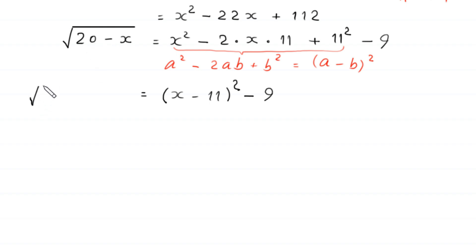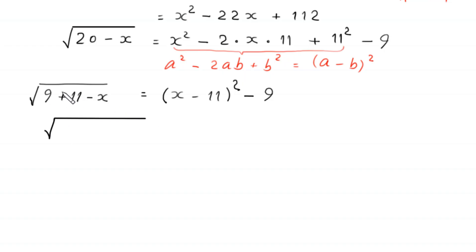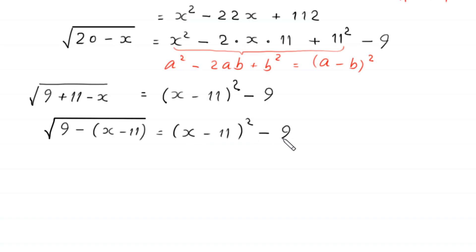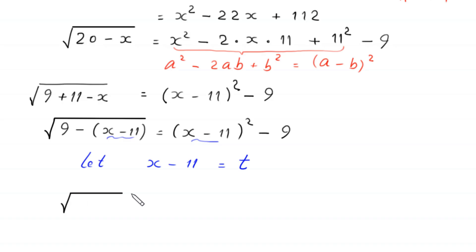We rewrite 20 minus x as 9 plus 11 minus x, so the left-hand side becomes the square root of (9 minus (x minus 11)). We substitute t = x minus 11, transforming the equation to: square root of (9 minus t) equals t squared minus 9.